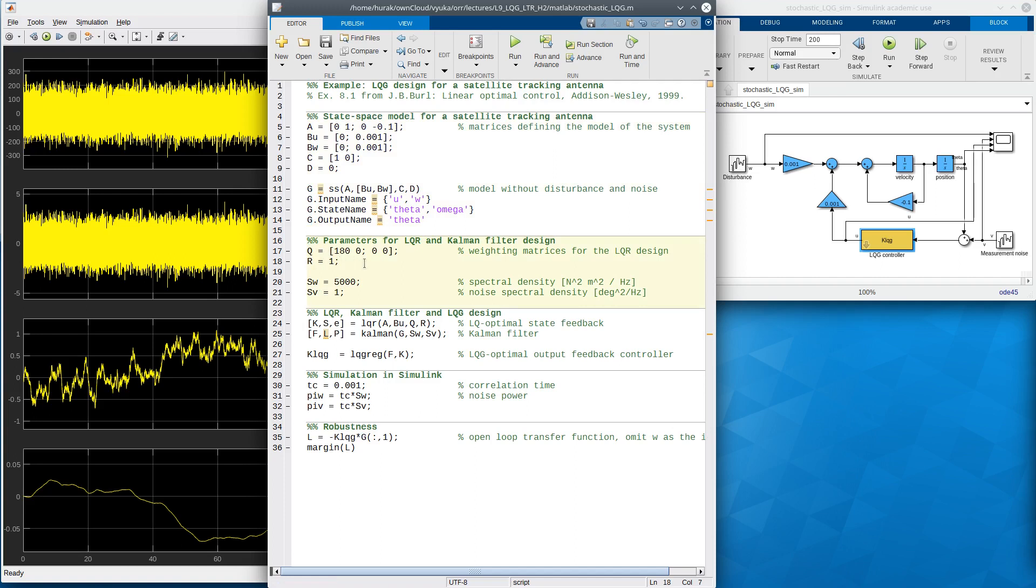What matters from the computational point of view is these parameters here. This is the place where I, as an engineer, design something or make decisions. I can set the penalty on the states and controls. The initial setting is that I only penalize the first of the two states, the distance and not the velocity. Then I have the two guesses at spectral densities for the two random variables: SW for the disturbance and SV for the measurement noise.